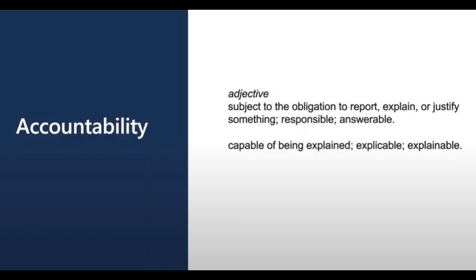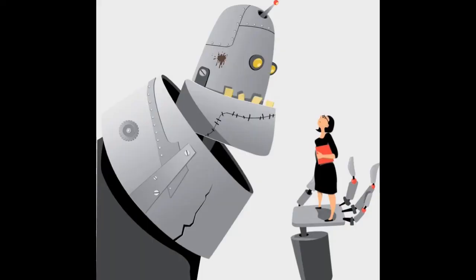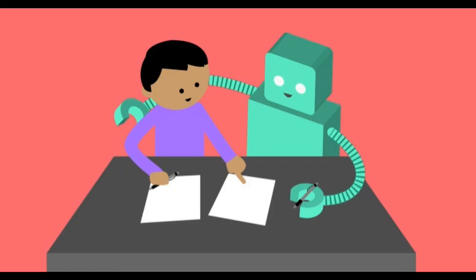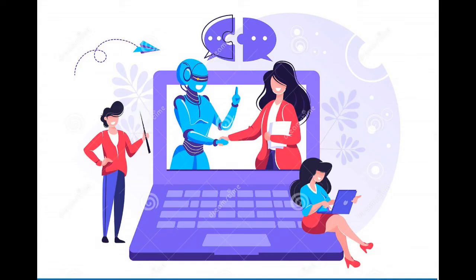Accountability: the people who design and deploy AI systems must be accountable for how their systems operate. Organizations should draw upon industry standards to develop accountability norms. These norms can ensure that AI systems are not the final authority on any decision that impacts people's lives and that humans maintain meaningful control over autonomous AI systems. Designers and developers of AI solutions should work within a framework of governance and organizational principles that ensure the solution meets ethical and legal standards that are clearly defined.